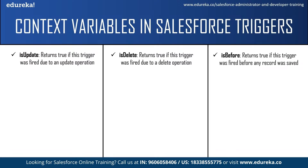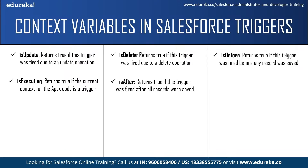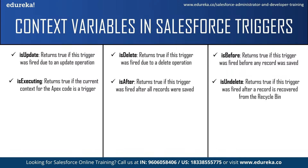After this we have isBefore — this returns true if the trigger was fired before a record was saved to the database. After this we have isExecuting — this returns true if the current context for the Apex code is a trigger and not a Visualforce page, a web service, or an API call. The next context variable is isAfter — this returns true if the trigger was fired after all the records were saved to the database. Next is isUndeleted — this returns true if the trigger was fired after the record was recovered from the recycle bin.